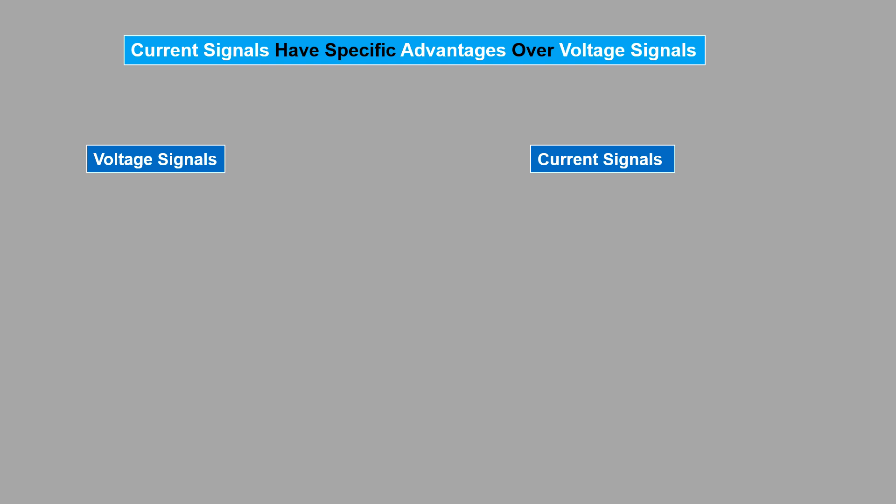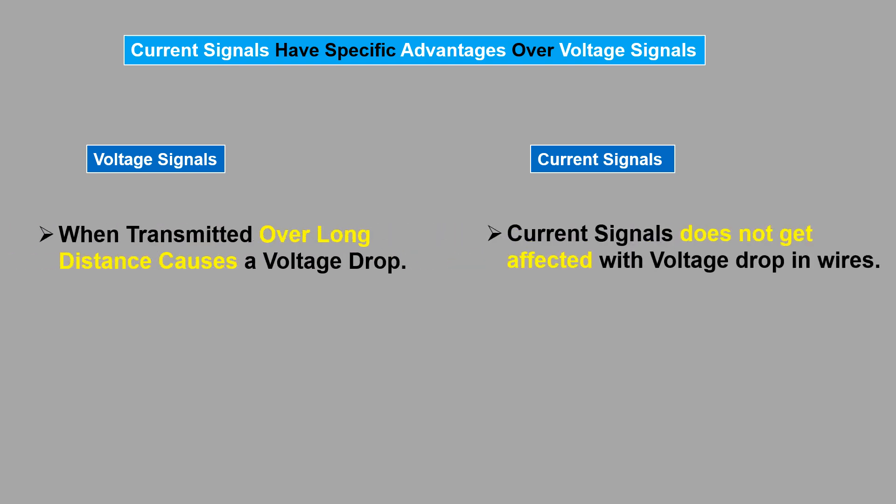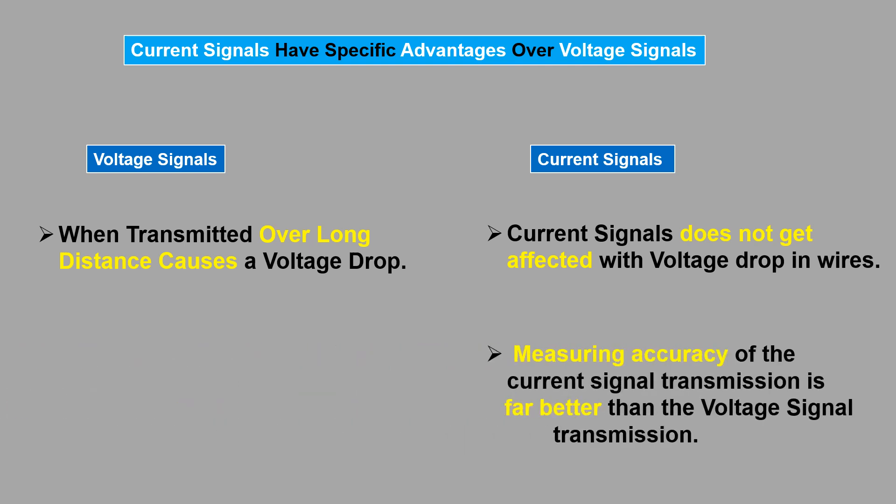Voltage signal when transmitted over a long distance causes a voltage drop in the wires. On the other hand, current signal does not get affected with voltage drop in the wires. The measuring accuracy of the current signal transmission is far better than the voltage signal transmission.